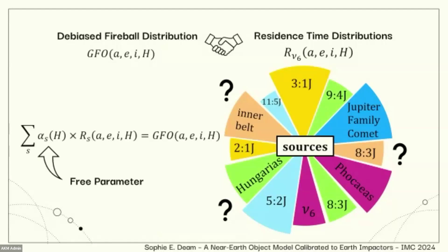So what I'm interested, or I've been interested in so far, is just figuring out what fraction of these sources create the GFO population. And it's a free parameter alpha, which is a function of size. So I'm looking at size dependence of these source strengths as well.